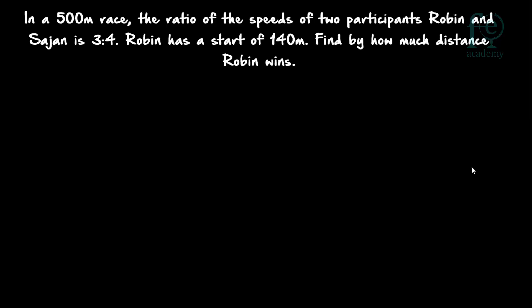Hi friends, welcome to today's class. Today's question is: in a 500 meter race, the ratio of the speeds of two participants Robin and Fajan is 3 is to 4. Robin has a start of 140 meters. Find by how much distance Robin wins.